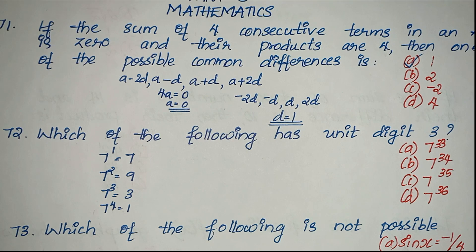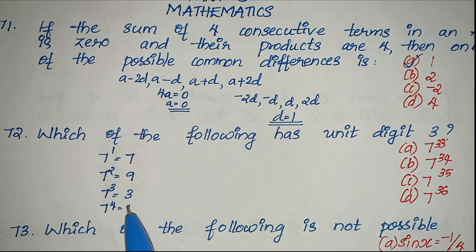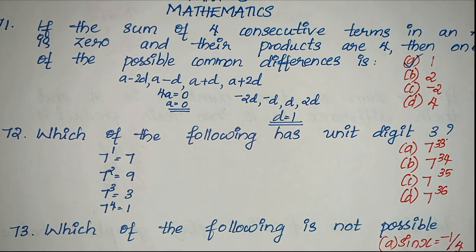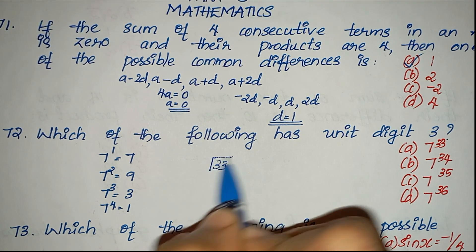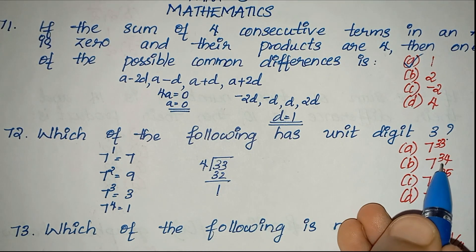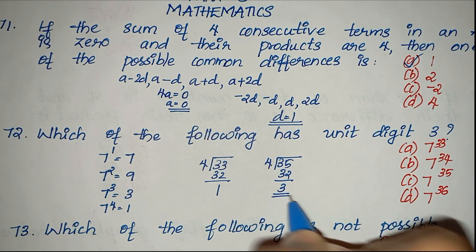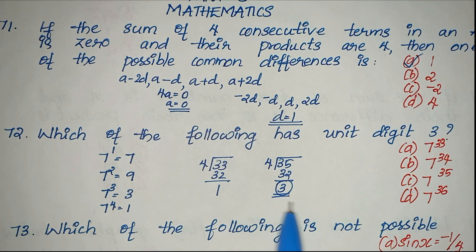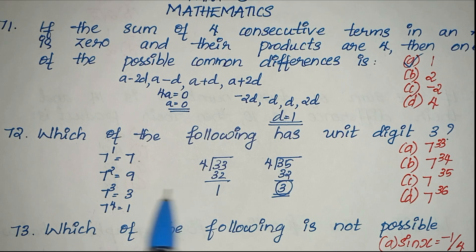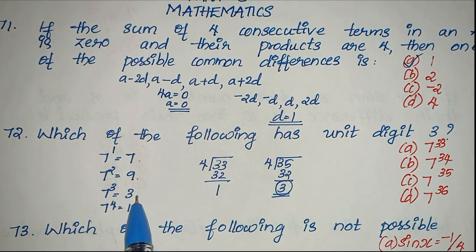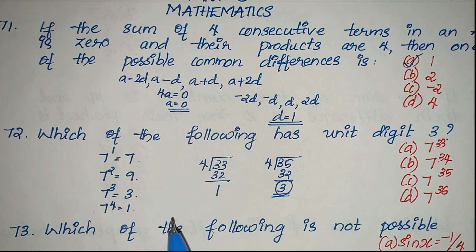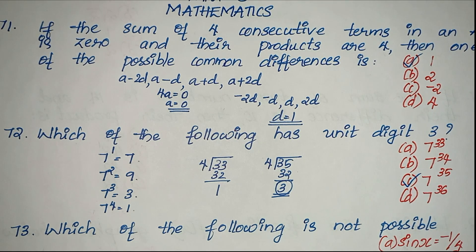Using this cycle, 7 raised to 35: 35 divided by 4 gives remainder 3. So the unit digit corresponds to position 3 in the cycle, which is 3. The unit digits repeat as 1→7, 2→9, 3→3, 4→1. Since the remainder is 3, the unit digit is 3. Option C is the right answer.